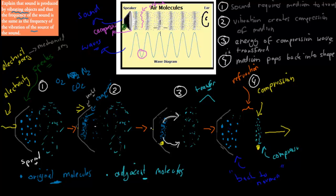So basically we have compression and rarefaction. The rarefactions are created because when we have a compression, there are some areas where there will be fewer particles and some areas where there are more. Now, the frequency of the source — the speaker — will be the same as the frequency of the sound being produced.